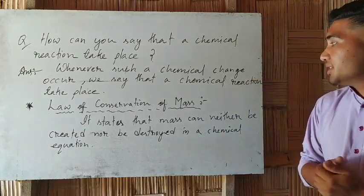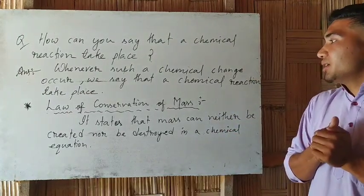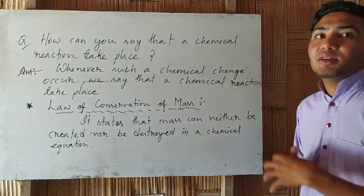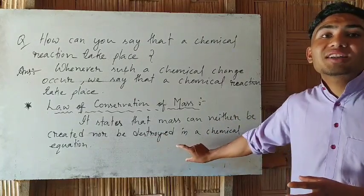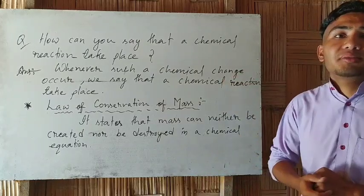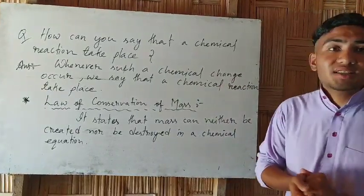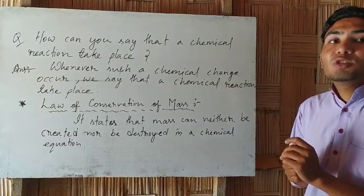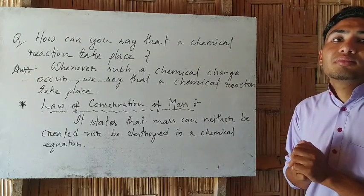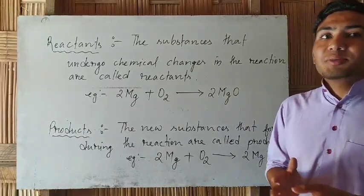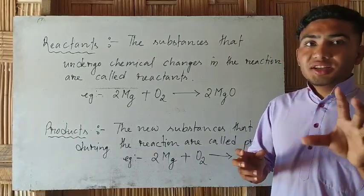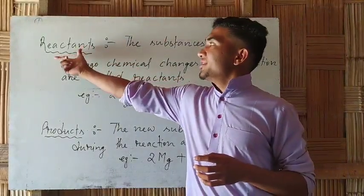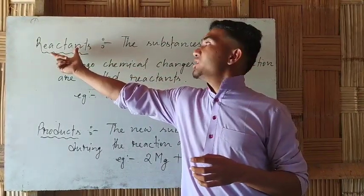The law of conservation of mass is a chemical equation. If you have mass, you can use it in this chamber. The law of conservation of mass states that matter is neither created nor destroyed in a chemical reaction. If you have a chemical reaction, the chemical reaction involves the materials.